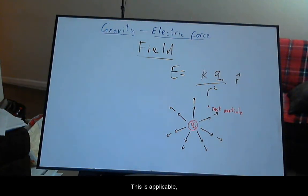This is applicable if the second particle is so much smaller than the primary particle that its effect will produce negligible alterations to the field. This second particle is then called a test particle.